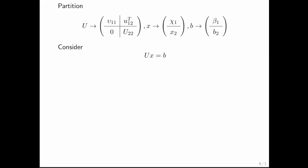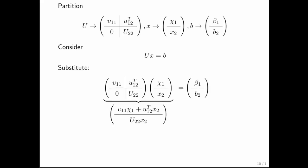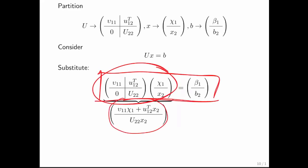We want to solve Ux equals b. So what we do is we substitute in the partition U, the partition x, and the partition b. And what we get is this right here. And then if we multiply this out, what we get is this right here.